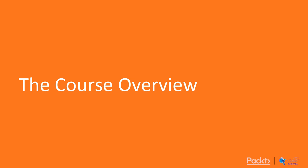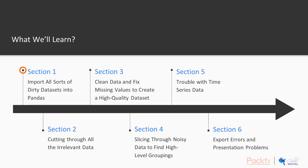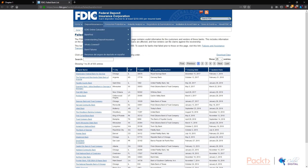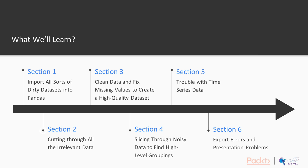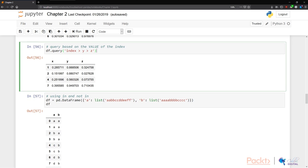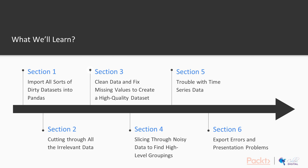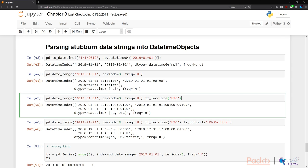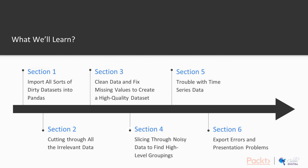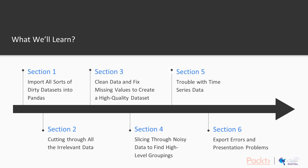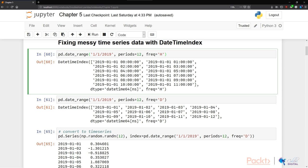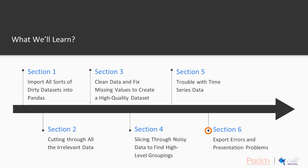Let me give a quick overview of what we're going to learn in this course. We're going to first look at importing all sorts of dirty data sets into Pandas, cutting through all the irrelevant data, and then starting on cleaning the data and fixing missing values to create high quality data sets. We then want to slice through noisy data to find high level groupings and look at time series data later on. Finally, we're going to look at exporting errors and presentation problems that we might encounter.